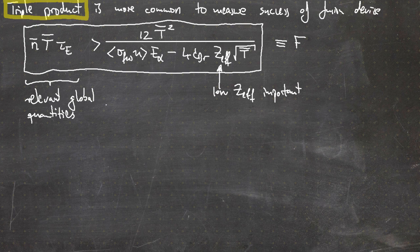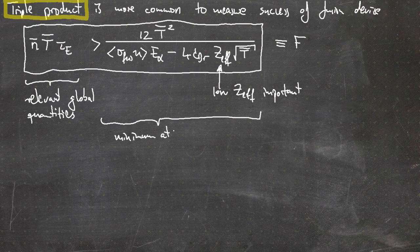The expression on the right-hand side has a minimum at roughly 15 keV — at an electron or ion temperature of approximately 15 keV (here we assume both to be the same).